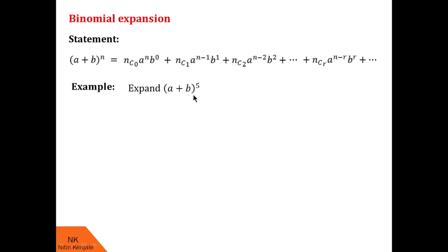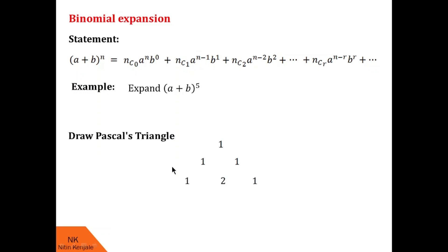Now let us see an example. We want to expand (a+b)^5. First, we draw Pascal's triangle with five layers. The fifth layer gives you the coefficients for the expansion of (a+b)^5.